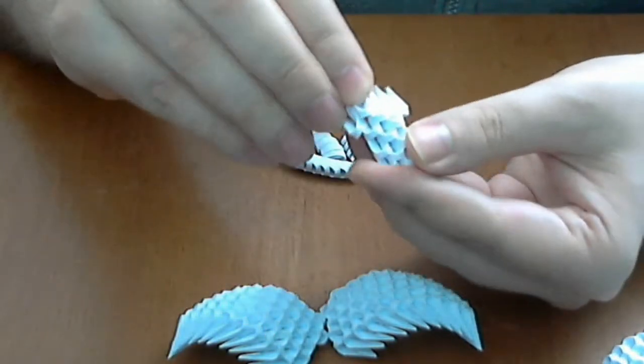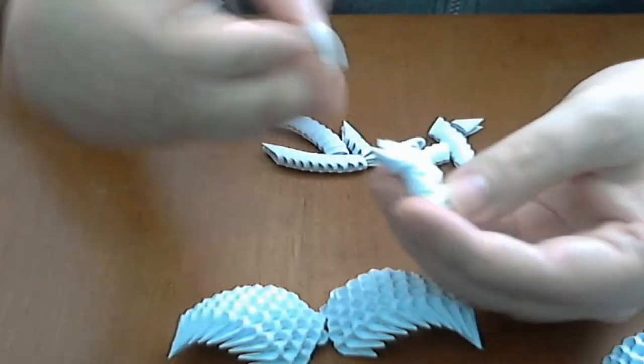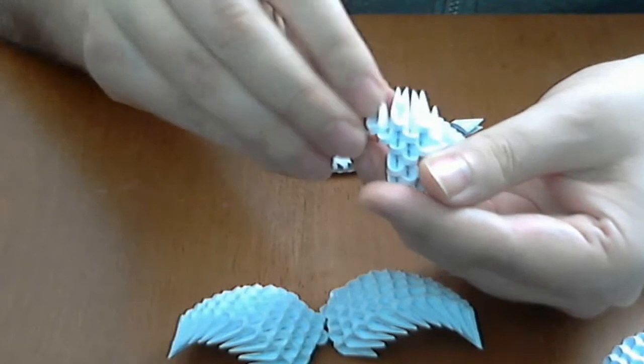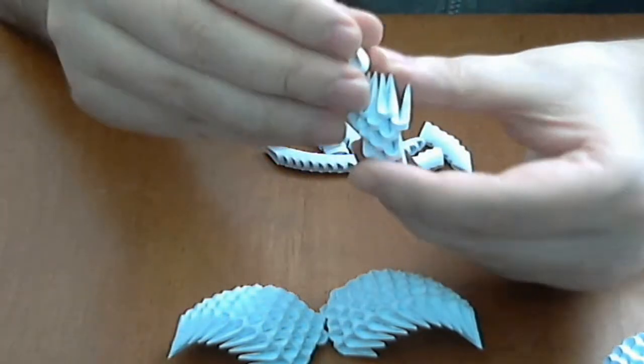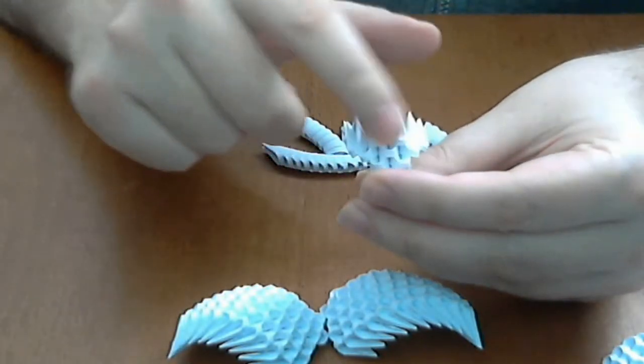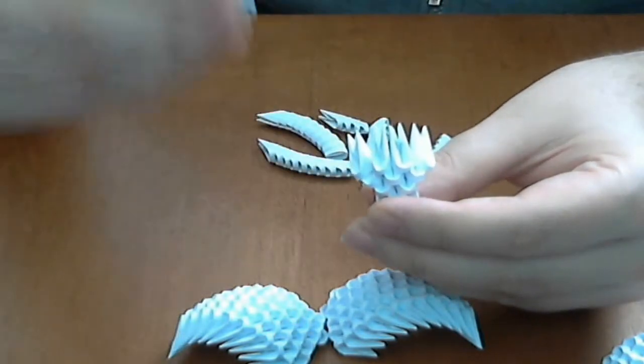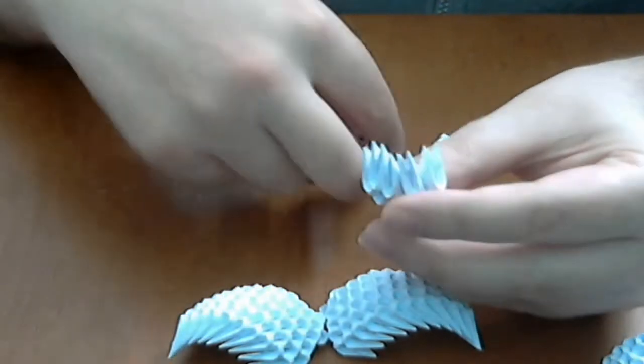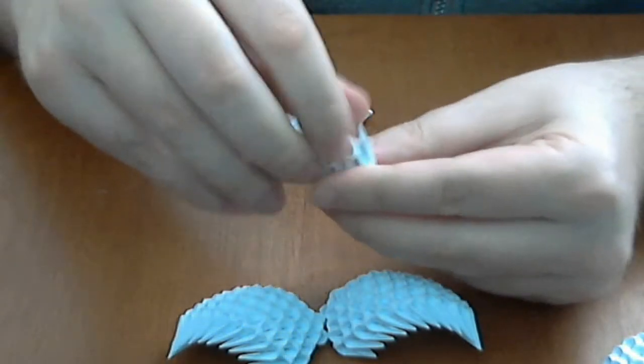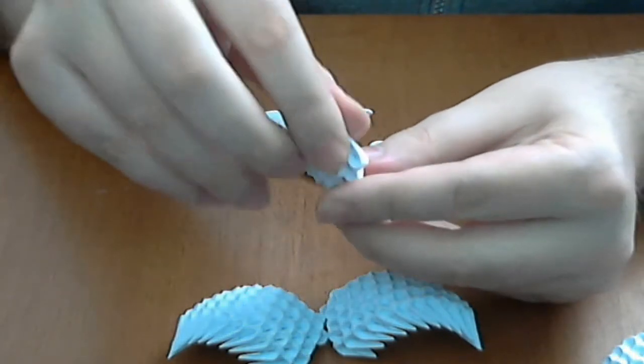We have 4 pieces in this row. And the next row we will increase to 4 pieces. 2 in the middle like this. And then 1 here, and another 1 here. We have 4 pieces in this row. And next we will increase to 5 pieces. In the same way we put 3 in the middle, like this. And increase here and here.